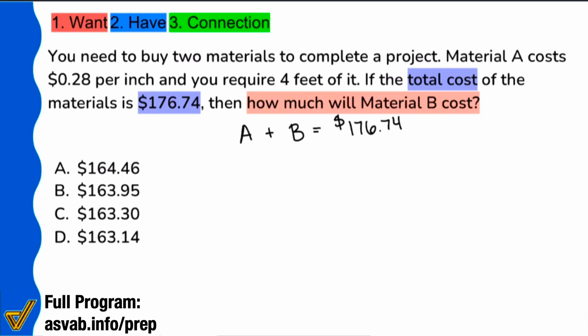Now we can use that to say, if we're trying to find the cost of material B, then let's take away material A and we'll get B by itself. Or in simpler terms, to find the cost of B, we'll take the total cost, that $176.74, and subtract the cost of A.